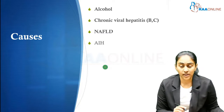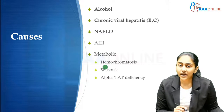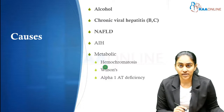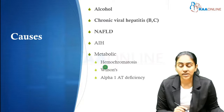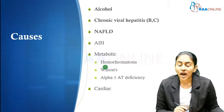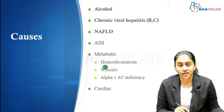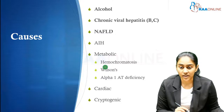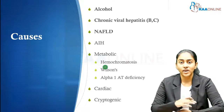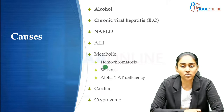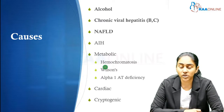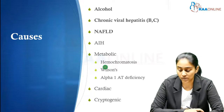Autoimmune hepatitis can cause cirrhosis. Other rare inherited metabolic diseases like hemochromatosis, Wilson's disease, and alpha-1 antitrypsin deficiency can all cause cirrhosis. Cardiac cirrhosis from long-standing right heart failure with congestive hepatopathy can also result in cirrhosis. Finally, when we are not able to determine the cause, we classify the patient as having cryptogenic cirrhosis.